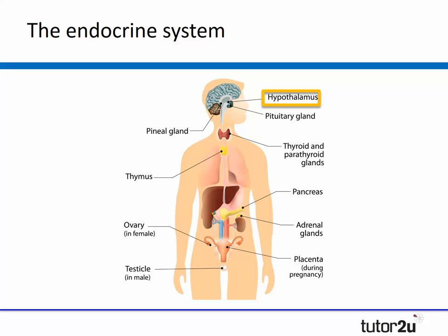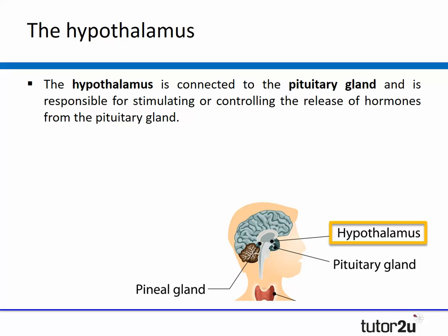Let's start by taking a look at the role of the hypothalamus. The hypothalamus is connected to the pituitary gland and is responsible for stimulating or controlling the release of hormones from the pituitary gland. It does this by sending a signal to the pituitary gland which causes this gland to secrete a stimulating hormone into the bloodstream which then targets a particular gland within the endocrine system. Therefore, the hypothalamus is really the control system that regulates the entire endocrine system.